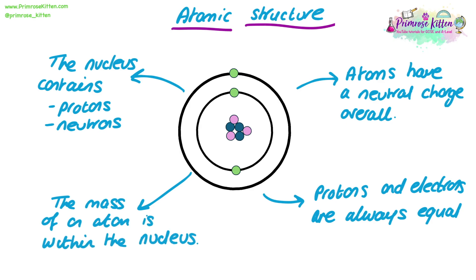For atomic structure, you need to be able to label a diagram of an atom with both the protons, neutrons in the nucleus, and the electrons on the outer shell. You then need to be able to compare the three subatomic particles based on their mass, their charge, and where they're located within an atom.